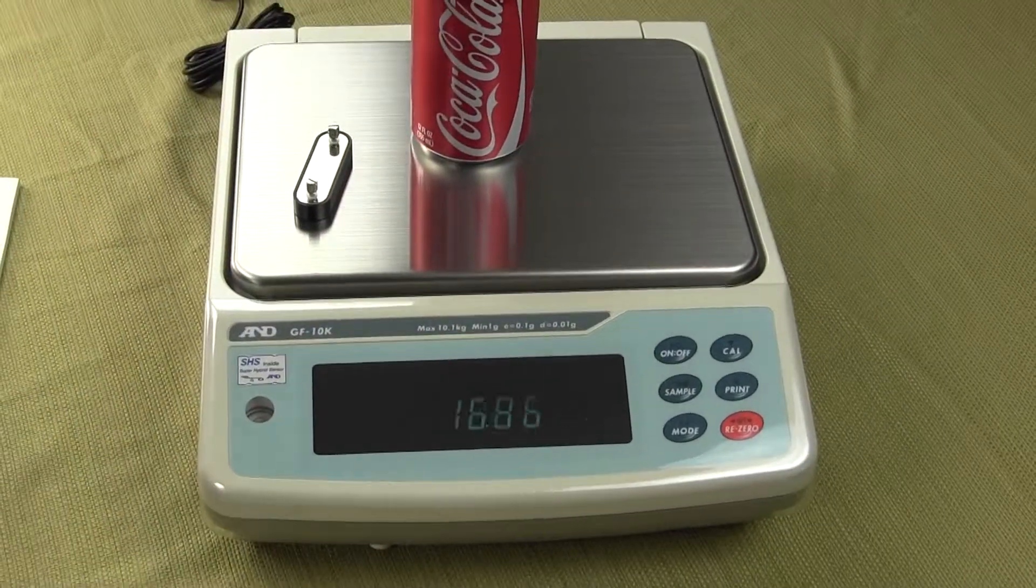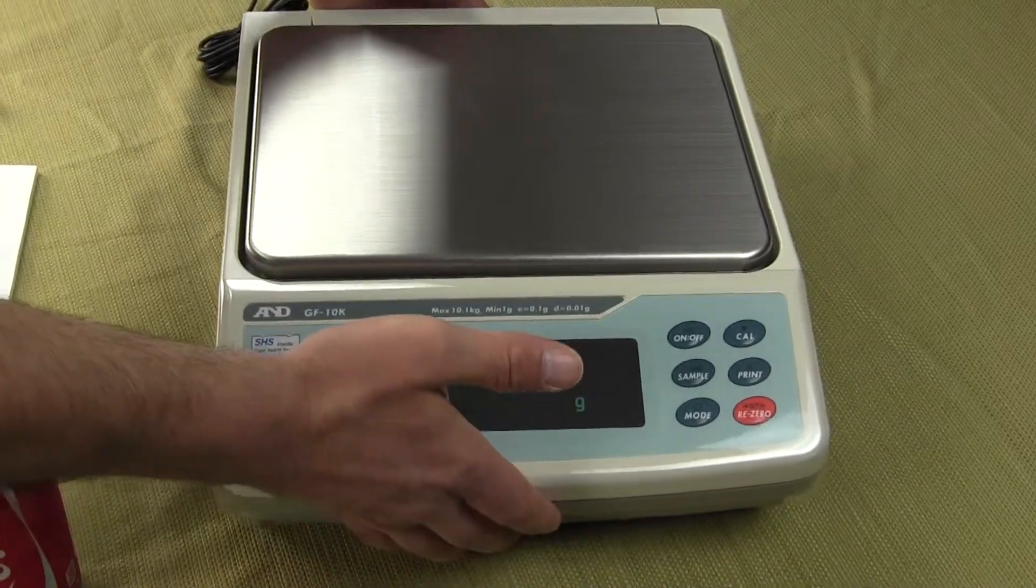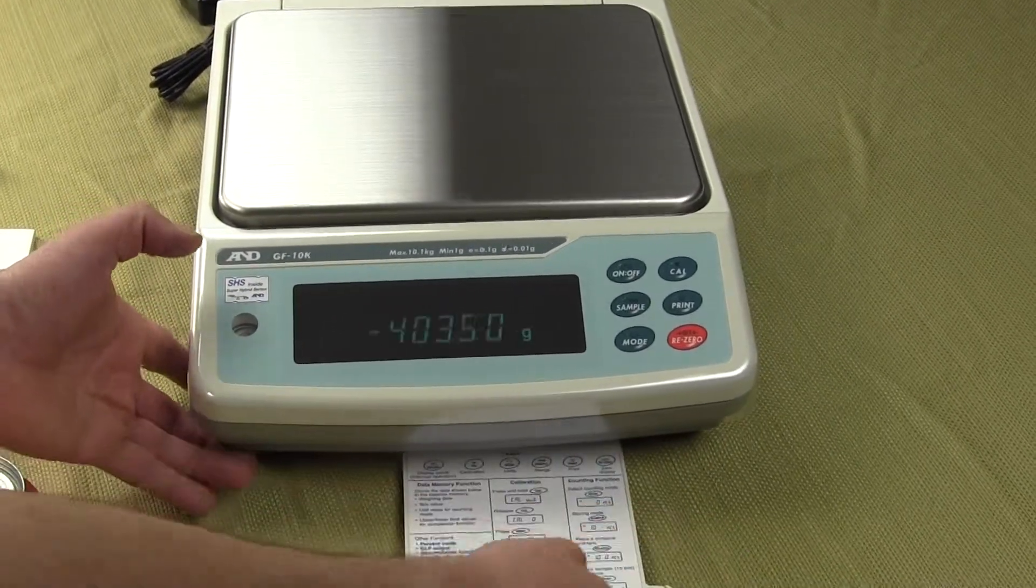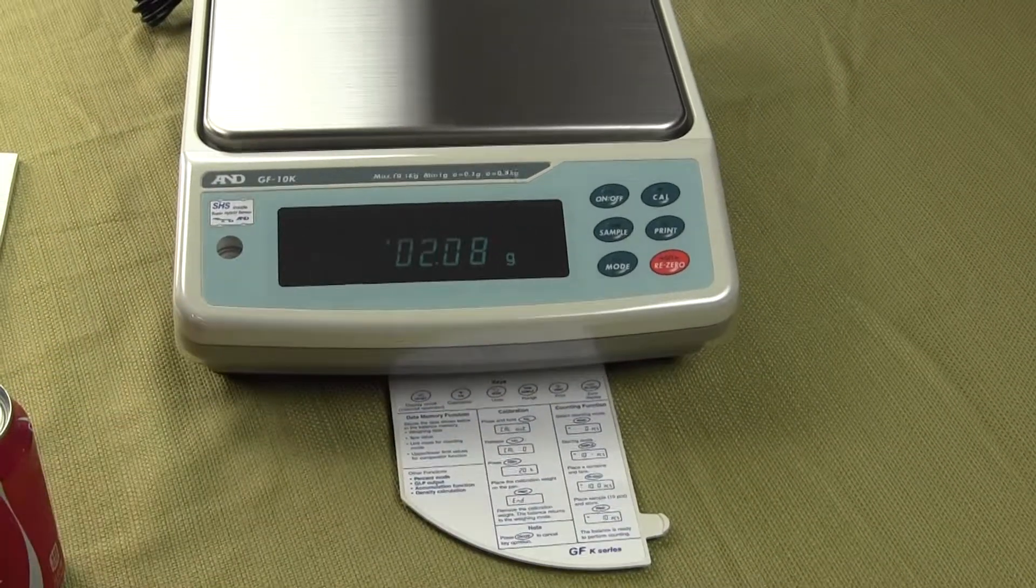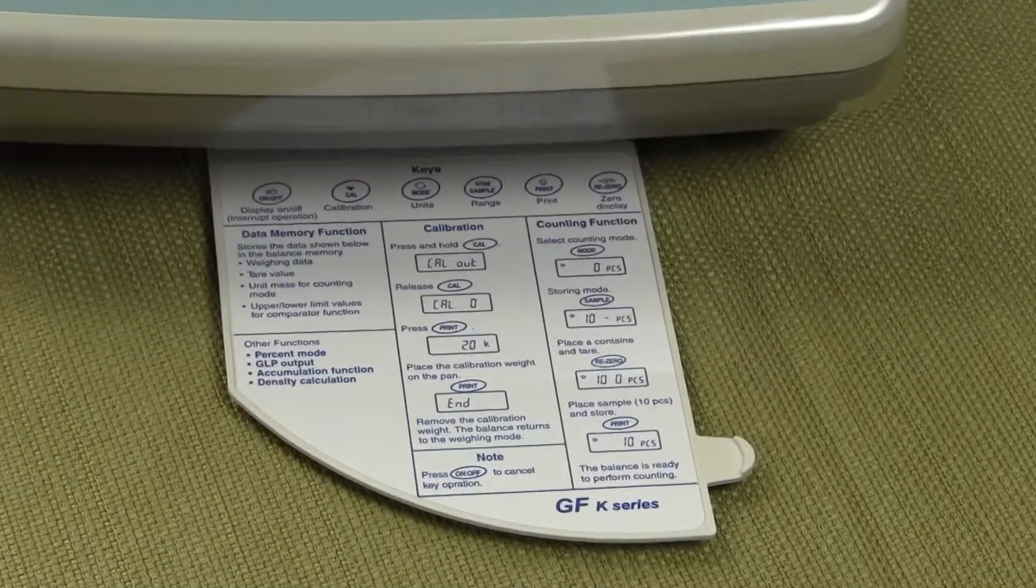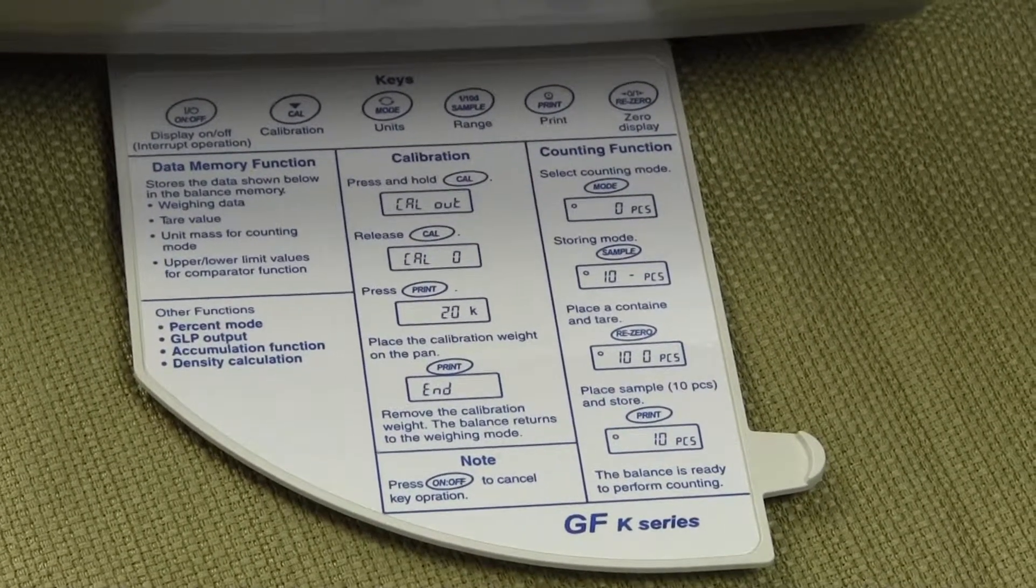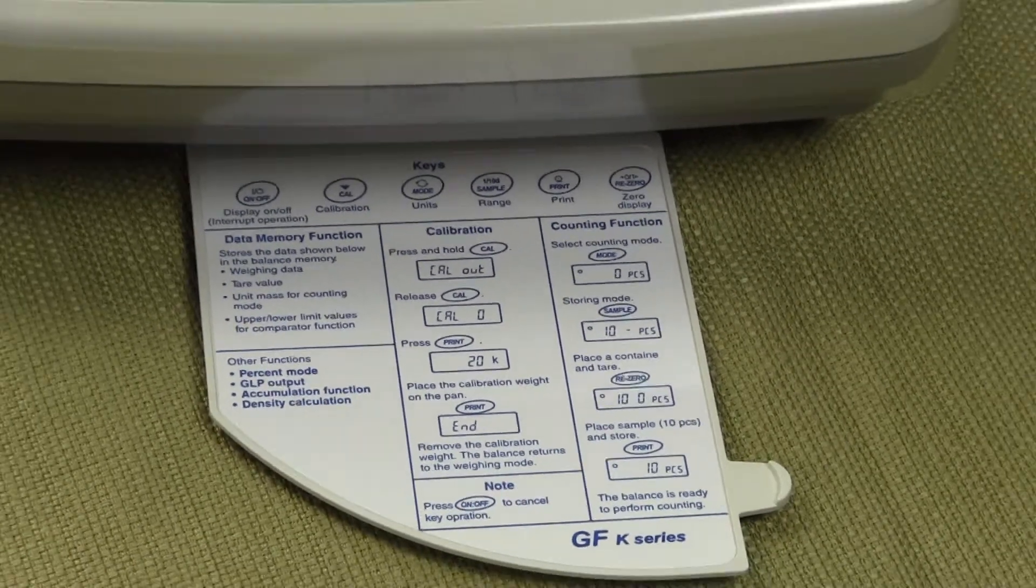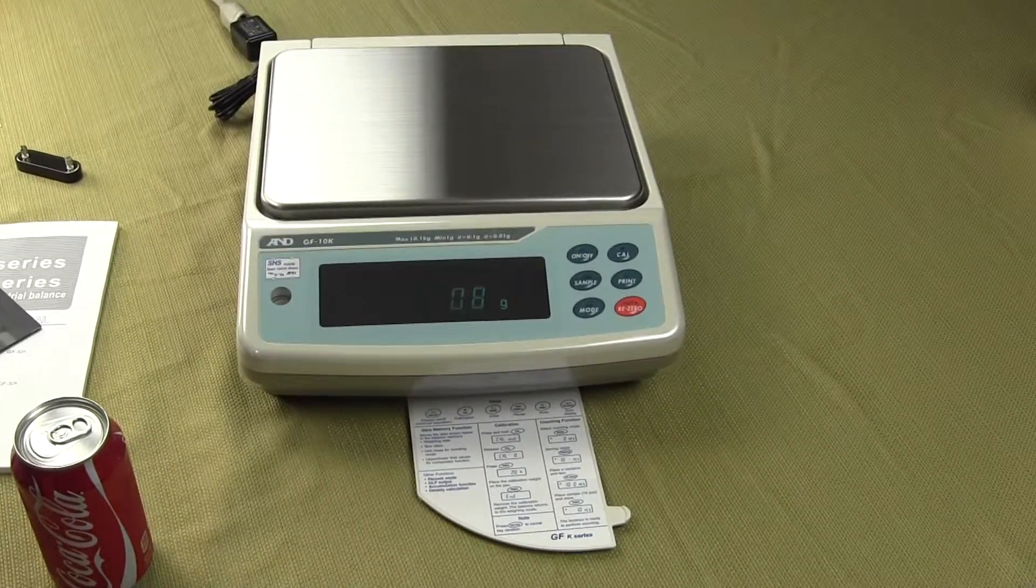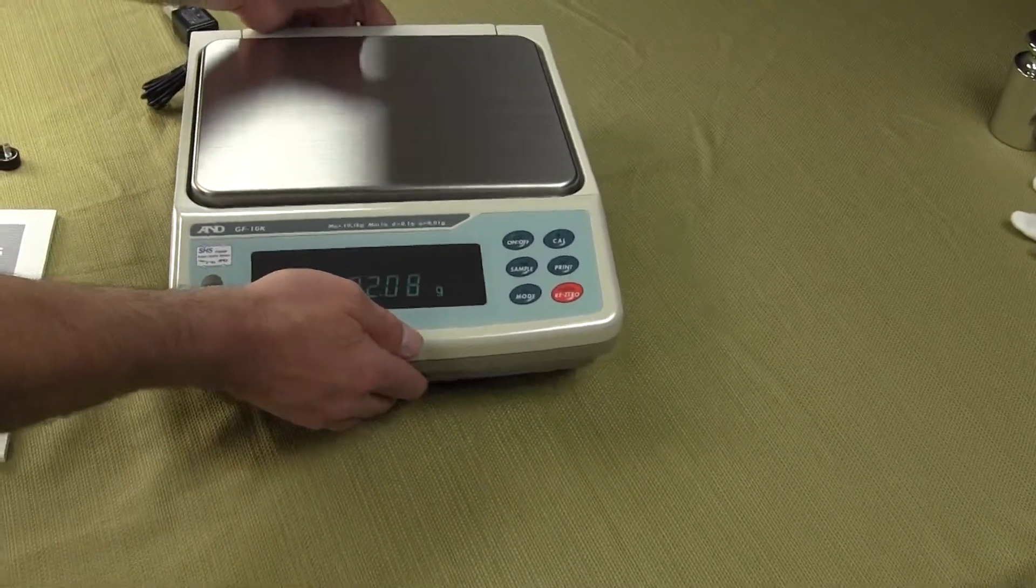I mentioned there's a cheat sheet here that I wanted to show you on the balance that helps operators configure the balance and use it. So let me just move this back. This cheat sheet is on the bottom of the balance and it just pulls right out. This sheet will show you how to calibrate the balance and also how to use the parts counting mode. So A&D really builds a nice product, very well engineered and thought out. So it's simple to use for the end user. And that's the goal. Anybody in a laboratory, you don't want to be spending hours trying to figure out how to use this precision instrument. You want to just open it out of the box, set it up and go.